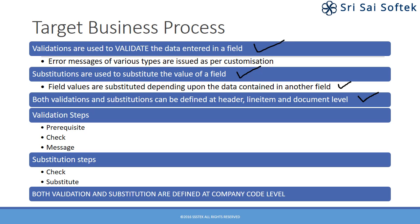What are the steps to create validation? We need to define a prerequisite that tells, given this condition, a particular message should come. So, given a prerequisite, check whether it is true or false. If it is true, go ahead. If it is false, give a message. That is how the validation is built.